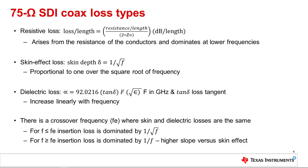As we just discussed coax cable attenuates high frequency content. Therefore dielectric loss is what we need to be most concerned about. There is a crossover frequency where skin and dielectric losses are the same.